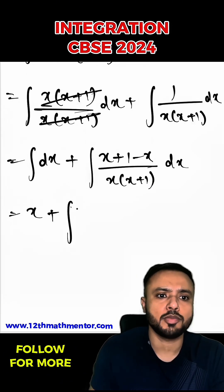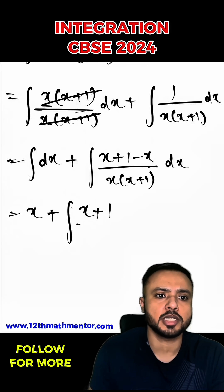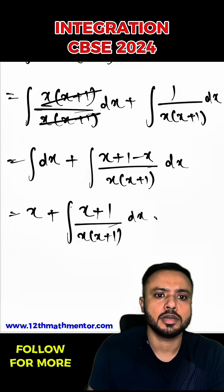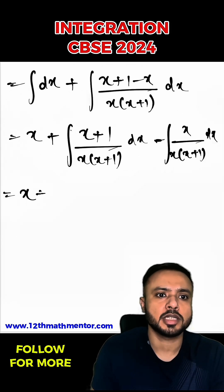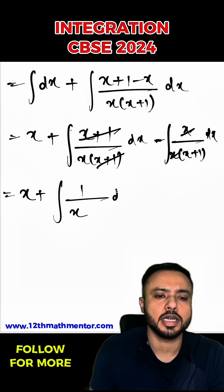Now to solve this integral I'm going to again separate into two different integrals. So I'm going to write x plus 1 upon x into x plus 1 dx minus integral of x upon x into x plus 1 dx. So it would be x plus, so this x plus 1 and x plus 1 is gone, and here x and x is gone, so I'm left here with 1 upon x dx minus integral of 1 upon x plus 1 dx.